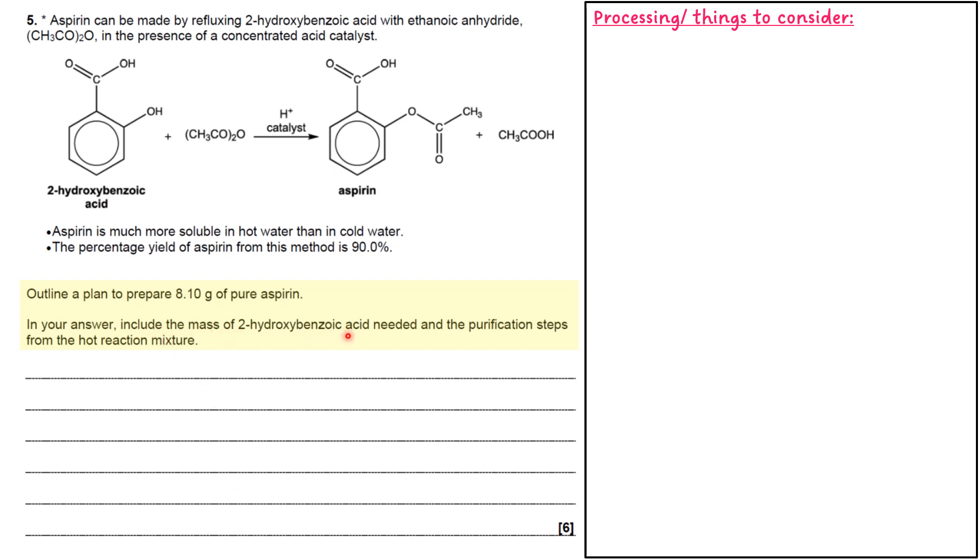They want the mass of 2-hydroxybenzoic acid and the purification steps from the hot reaction mixture. Now what's also interesting is they don't tell us the melting point or boiling point of aspirin. They don't say whether it's a liquid or a solid. So we've got to make a decision between whether we use liquid purification techniques such as distillation or separating funnel or drying agent, or whether we use solid purification techniques such as recrystallization.